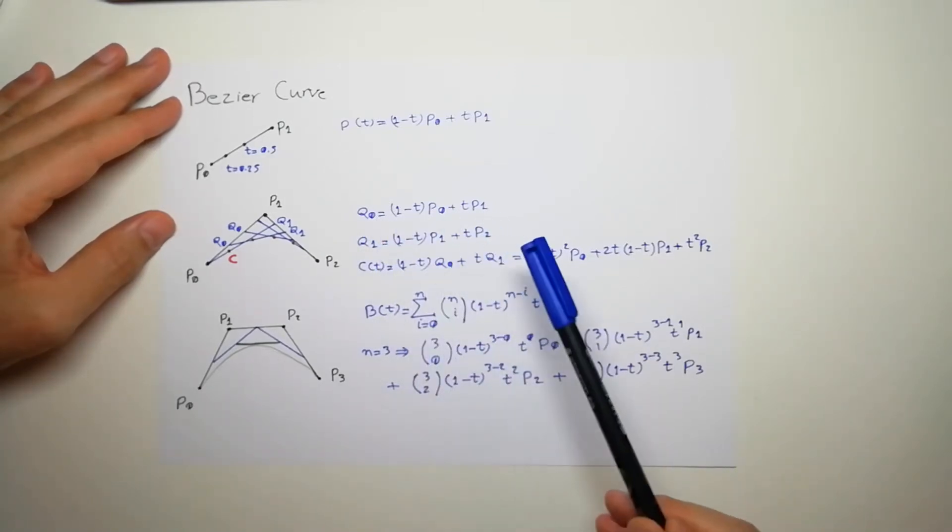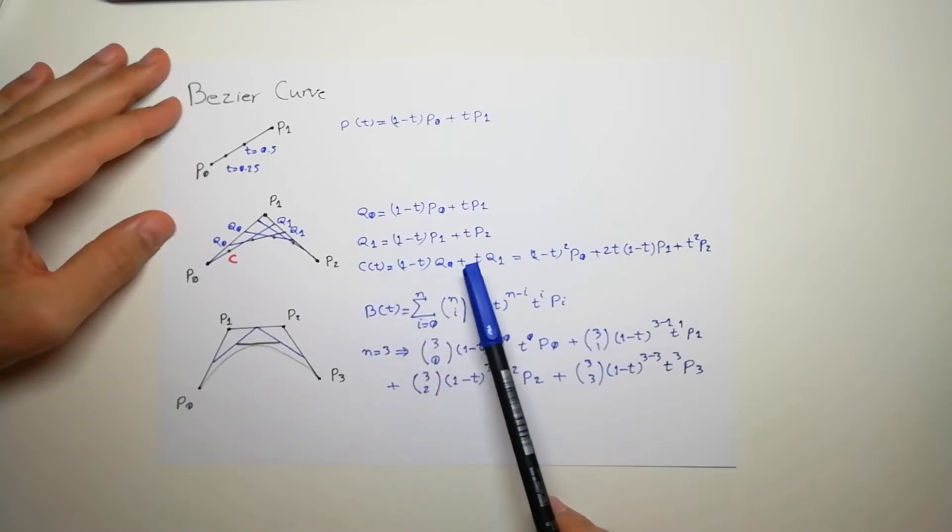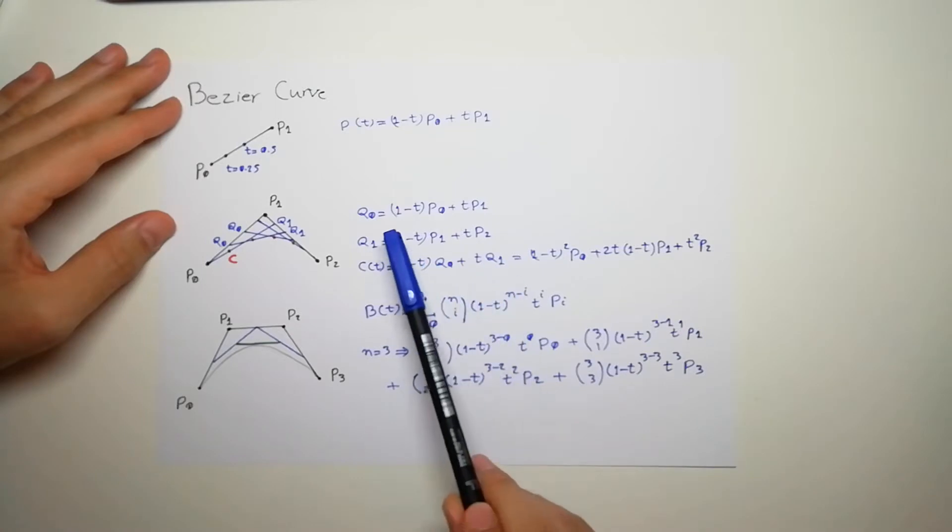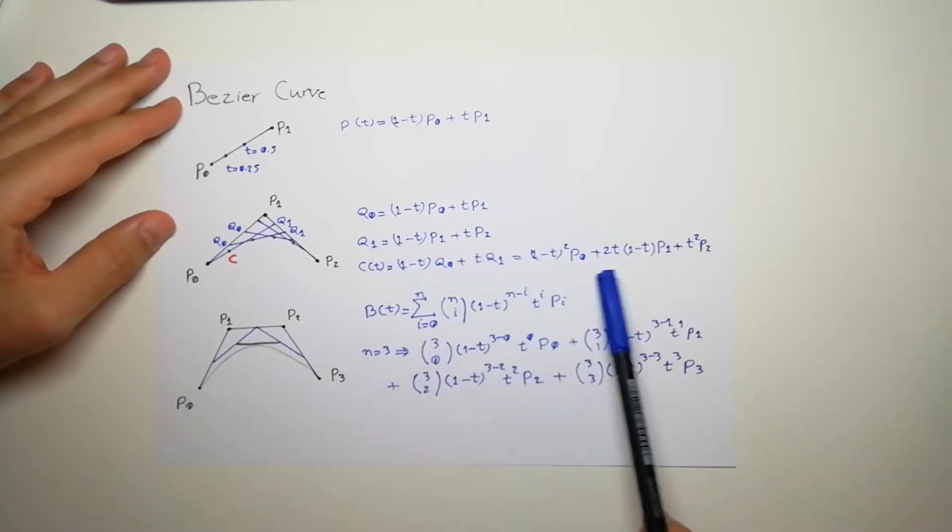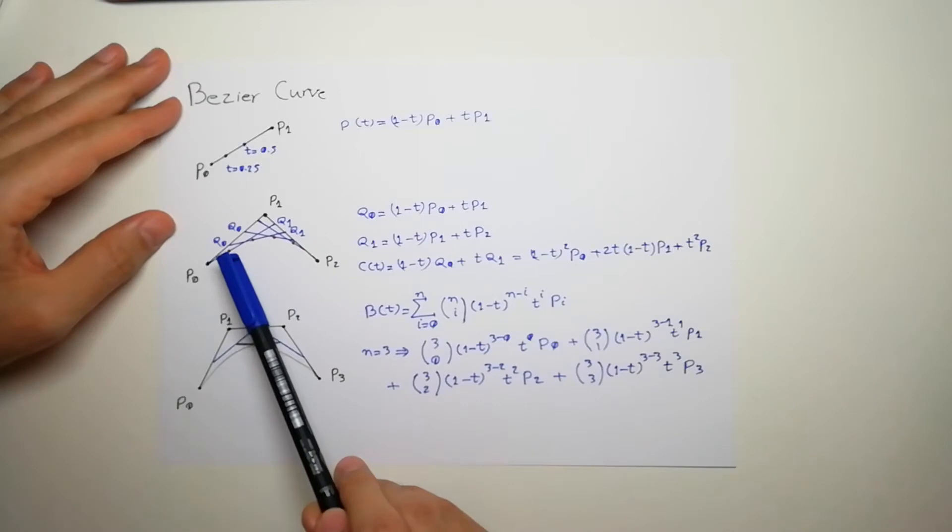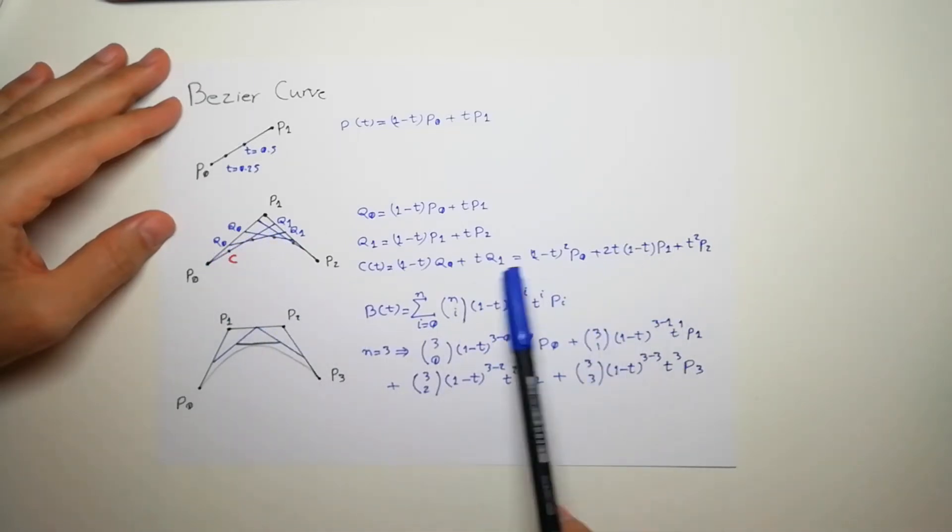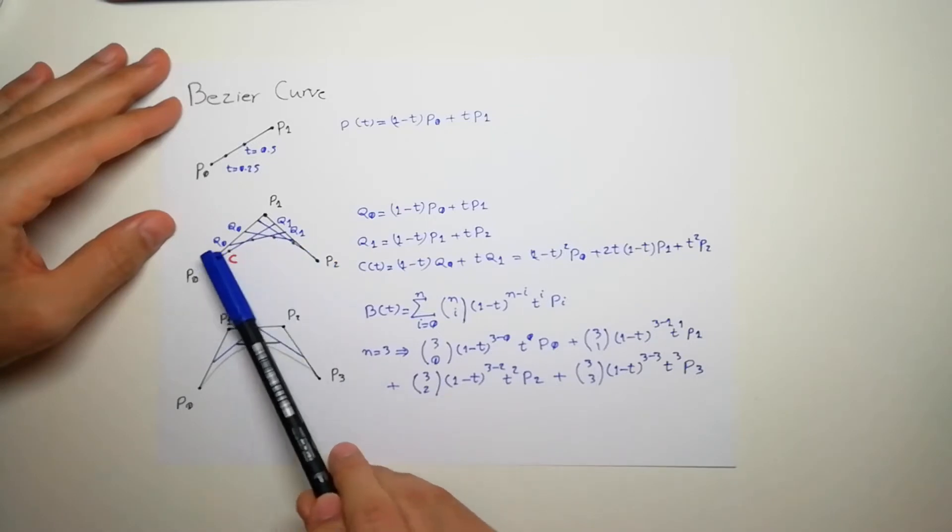Plus t times q1. q1 also we have the equation. So if you plug q0 and q1 from here and multiply, we will get this equation which gives us these points, these red dots. And you can see it's a polynomial, so we can see it's a second order polynomial curve here.